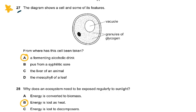Question 27 is mentioned in the exam report — less than one third of candidates recognized the diagram of a yeast cell. The cell had a vacuole and granules of glycogen. Glycogen is only present in humans, bacteria, and yeast. It couldn't be a human or animal cell because it has a cell wall — cell walls are only present in bacteria and fungi. The answer is a fermenting alcoholic drink. Bacteria don't have a vacuole; liver cells don't have a cell wall; mesophyll cells have starch, not glycogen.